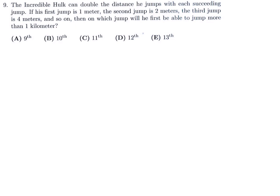The Incredible Hulk can double the distance he jumps with each succeeding jump. His first jump is 1 meter, second jump is 2 meters, third jump is 4 meters, and so on. On which jump will he first be able to jump more than 1 kilometer?